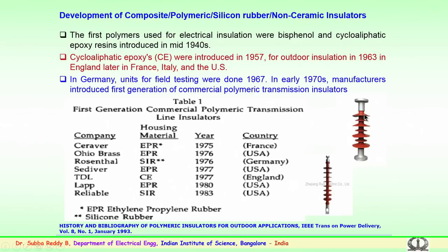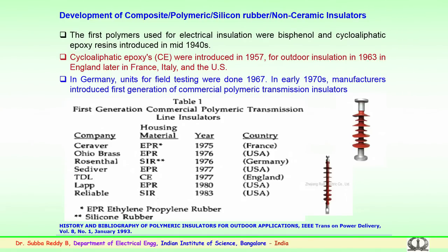The silicon rubber insulator consists of metal end fittings, a silicon rubber housing, and a fiberglass rod connecting the metal fittings internally — on which the silicon rubber or ethylene propylene rubber has been fixed. This is how the polymer insulator looks. We will look into how composite, polymeric, or silicon rubber insulators are manufactured, and the proper care needed during manufacture and transportation.